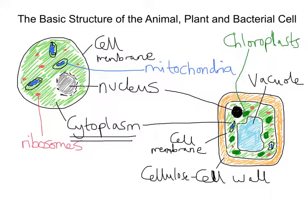So we can see straight away that there are some differences between this animal and plant cell. Three key things to note that the plant cell has that the animal cell doesn't: chloroplasts is one, cell wall is two, and the vacuole would make three.